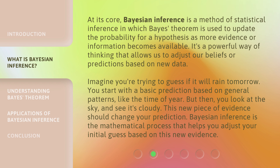Imagine you're trying to guess if it will rain tomorrow. You start with a basic prediction based on general patterns, like the time of year. But then, you look at the sky and see it's cloudy. This new piece of evidence should change your prediction. Bayesian Inference is the mathematical process that helps you adjust your initial guess based on this new evidence.